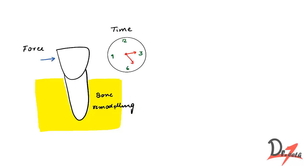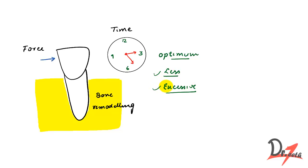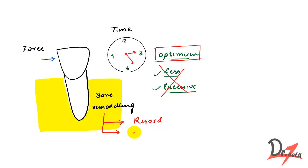The reason we need optimum force is that if you apply less force it would be insufficient, and if you apply excessive force it would cause damage. In both cases — less or excessive — we would not get the results we want. We also need bone remodeling: certain areas of bone will resolve and certain areas will form.